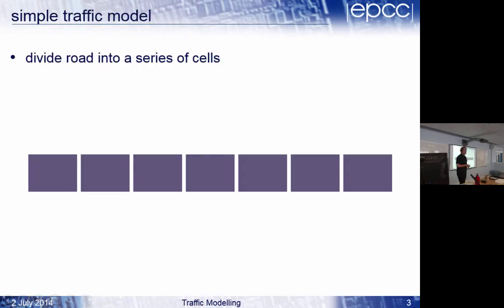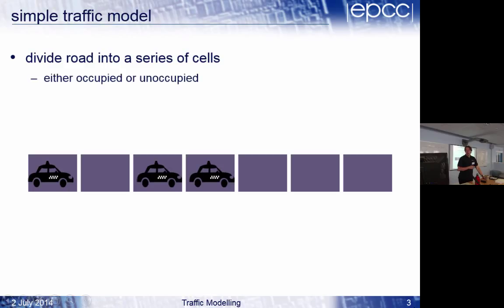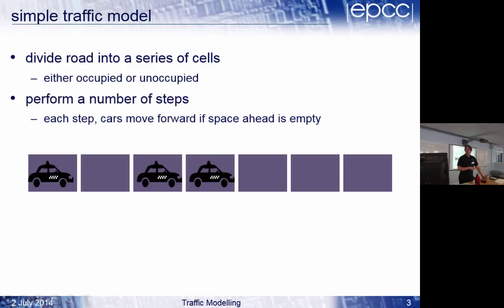So we're going to do a very simple model - a very simple cellular automaton, the most simple one you can imagine. We're going to divide the road into a series of cells. Here I've got seven cells. A cell is either going to be one or zero, occupied or unoccupied. So I've got cars in them. And the update rule is very simple: each step, a car moves forward if it can, and doesn't if it can't.